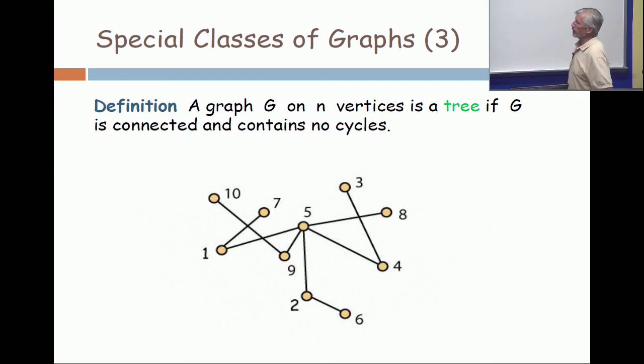So you can see in this picture that the leaves are three, seven, six, eight, and ten. And the other vertices are cut vertices.